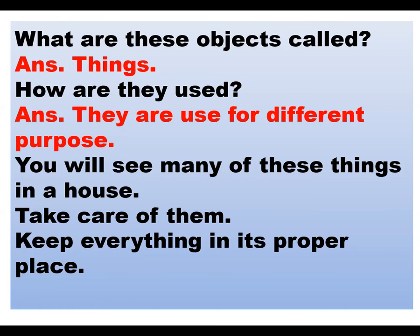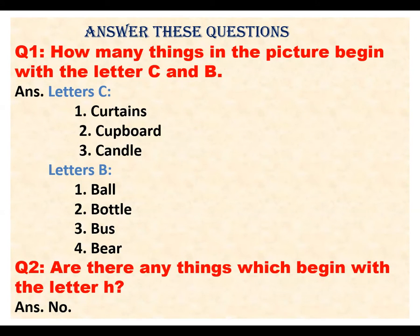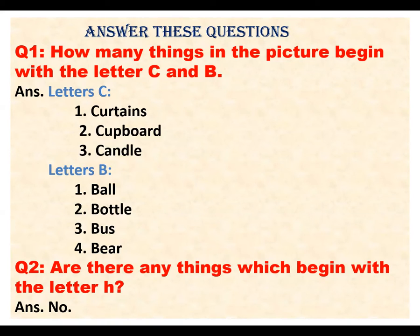Now here you have some questions. Question number one is: How many things in the picture began with the letters C and B? The things beginning with the letter C are: curtain, cupboard, candle. And the things beginning with the letter B are: ball, bottle, bus. Question number two is: Are there any things which began with the letter H?